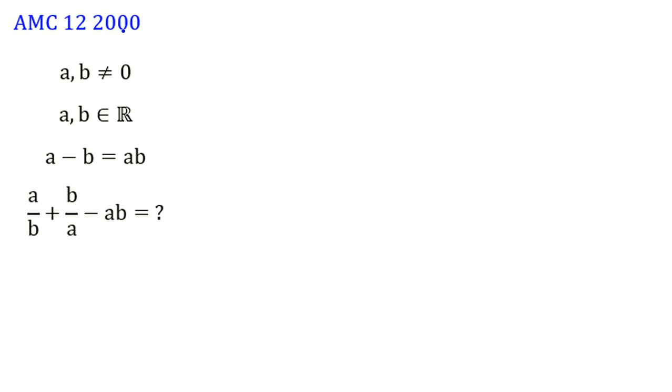AMC 12 2000, problem number 11. A and B are non-zero real numbers. A minus B equals AB. A over B plus B over A minus AB is what?